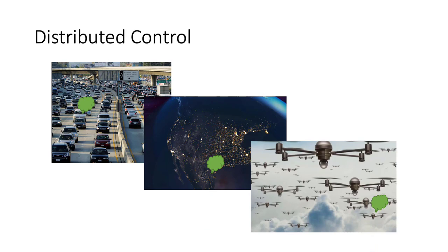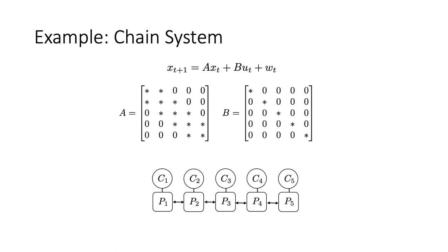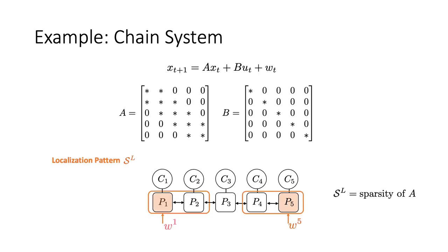A second requirement for control design in large-scale systems is distributed decision-making. Because the network size is often very large, each local action should be computed using local information only. Let's look at a concrete example. Consider a linear system where the topology of the underlying dynamics is a chain. Each agent in the system has its own local controller and is dynamically coupled with its immediate neighbors. For the disturbance localization, we consider a localization pattern, which we denote as S_L. This pattern is a binary matrix that prescribes the local region that each disturbance has to be contained in.